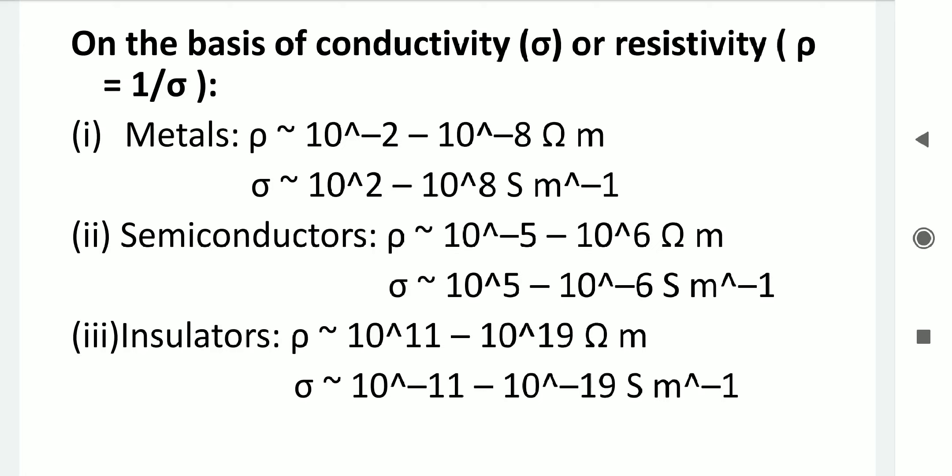For insulators, a very large amount of input is required to generate even a small current. The output response is very low. Insulators offer very high resistivity in the range of 10¹¹ to 10¹⁹ ohm·meter, and the corresponding conductivity is 10⁻¹¹ to 10⁻¹⁹ siemens per meter.